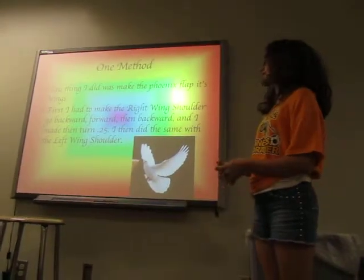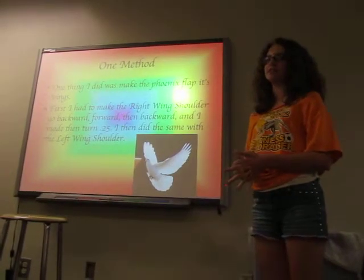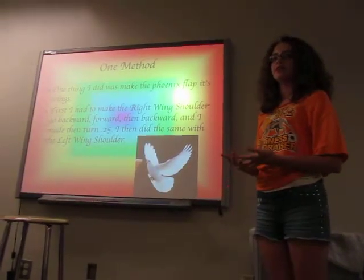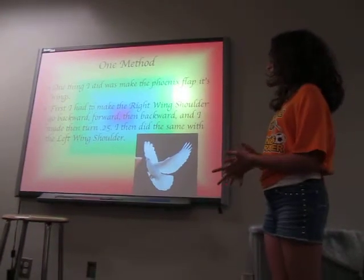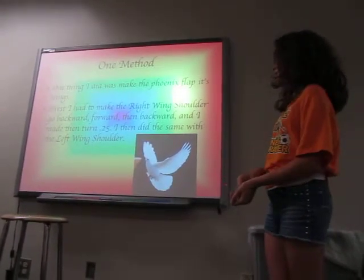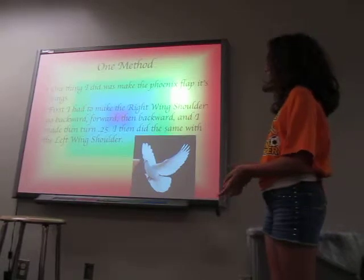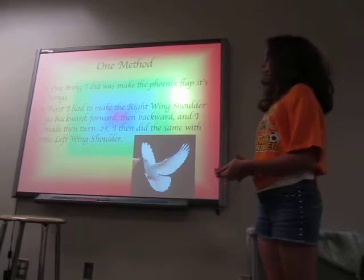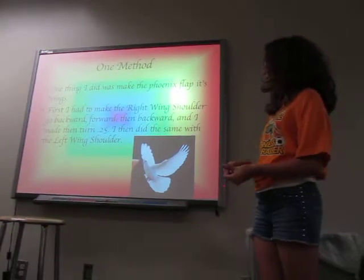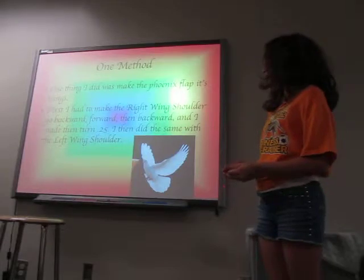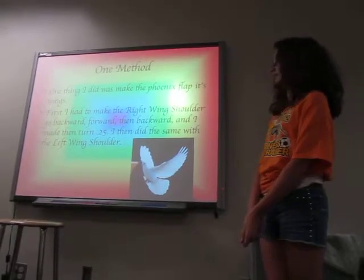One of the methods I did was I made my Phoenix flat foot swings. First I had to make the right wing shoulder go backwards, forward, and then backward again, and I had to make the rotation 2.5. I then did the same with the left wing shoulder.